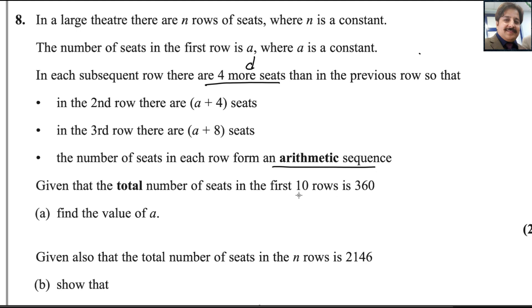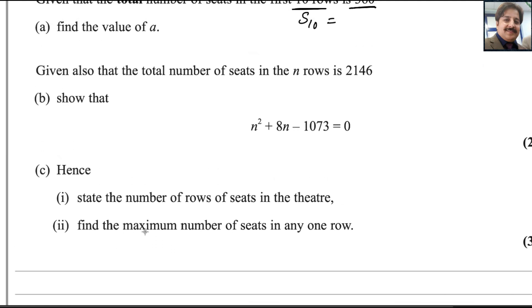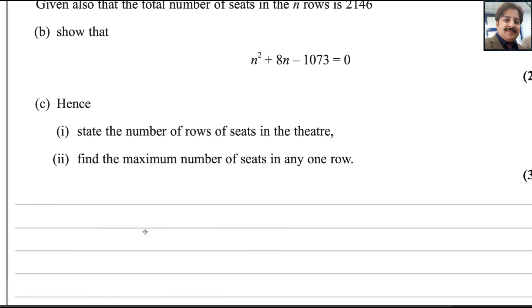So this will be common difference of two numbers, d. Given that the total number of seats in the first 10 rows is 360, so this will be S₁₀, total number of seats. Find the value of a. From this information we could find the answer by using the sum formula. Sum of the series formula in arithmetic. If you remember, we know the formula Sₙ that equals n/2 times (2a + (n-1)d).